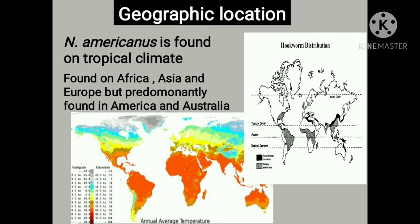Necator americanus is exclusively found in tropical and temperate regions. The eggs require a moist, warm, and shaded environment to hatch. The heat required by the juveniles or larvae to fully mature are from 23 to 30 degrees Celsius. Eggs will die below freezing, or under soil desiccation — too dry soil. The ideal soil conditions are where the water drains but not too quickly, or moist soil. Necator americanus is known as the American murderer because it infects approximately 700 million people around the world. The worm earned its alias because it's commonly found in the soil of the southern United States and South America.